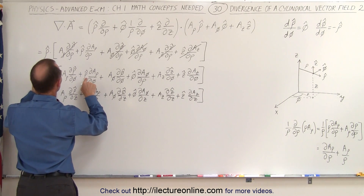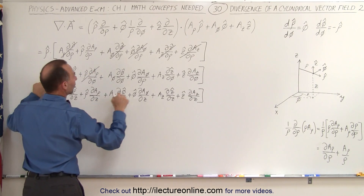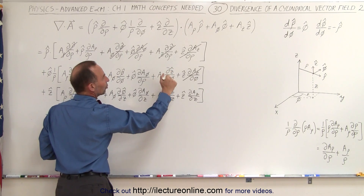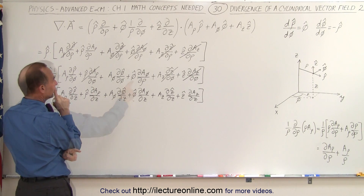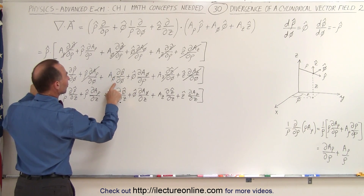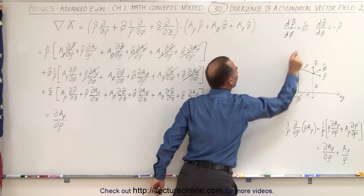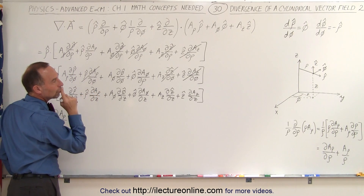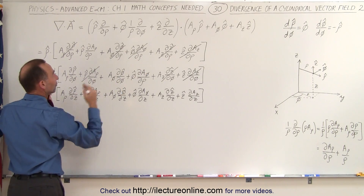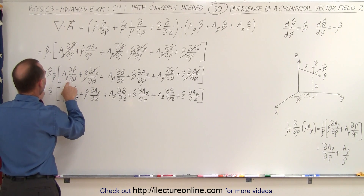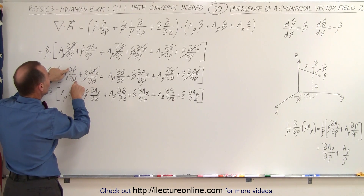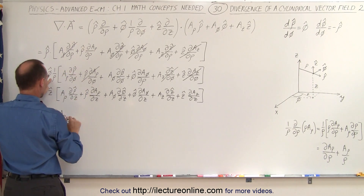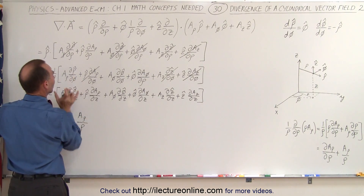Moving to the second part: when we multiply the phi unit vector times the rho unit vector, they are orthogonal — so that disappears. Multiplying z times phi is also orthogonal — that disappears too. The partial of z with respect to phi is zero since z doesn't change when phi changes. Now examining what survives: this term survives, this term survives. The partial of the rho unit vector with respect to phi — as phi changes, the rho unit vector does change, so we have to take that into account. The partial of phi with respect to rho gives the phi unit vector, and phi-unit-vector dot phi-unit-vector equals one, so we end up with plus a_rho divided by rho. That term survives.